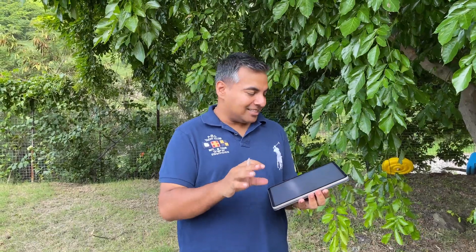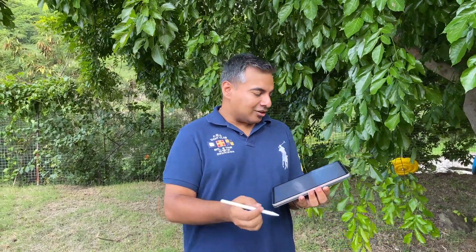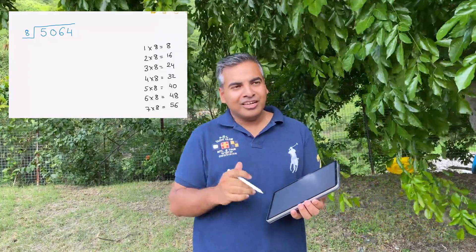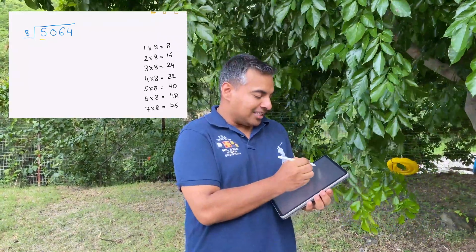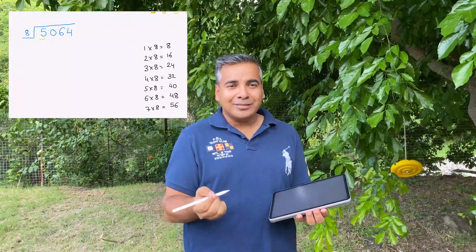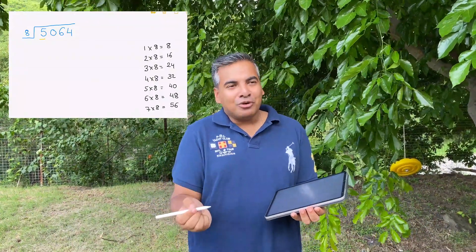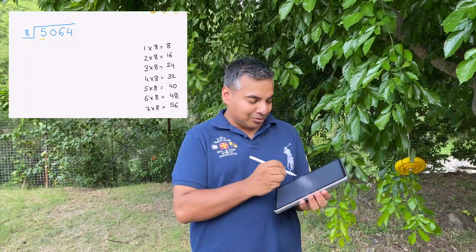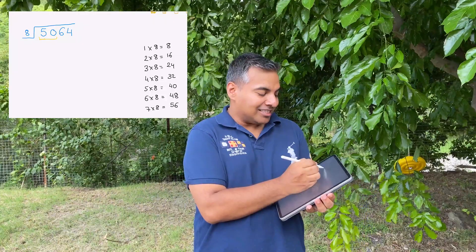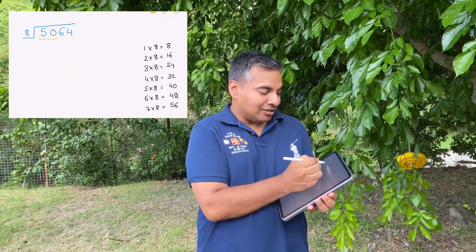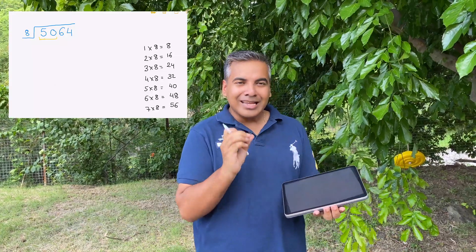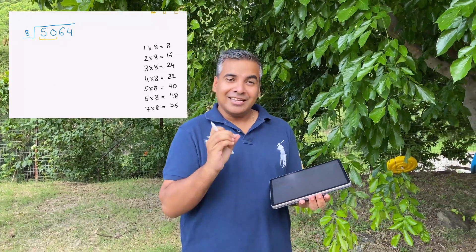Step two is that we start the long division. First of all we look at the first digit of the big number. The first digit is five — can five be divided by eight? No, it's too small. So what we do is join the first two digits together: five and zero, making fifty. So the first number to divide is fifty.